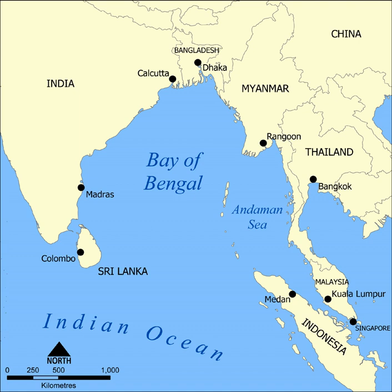The Bay gets its name from the historical Bengal region, the Indian state of West Bengal, and modern-day Bangladesh. In ancient scriptures, this water body may have been referred to as Sinus Gangeticus or Gangeticus Sinus, meaning Gulf of the Ganges. Other Sanskrit names include Vangasagara, meaning Bengal Sea, and Purvapayoti, meaning Eastern Ocean. Even today in Bengali and Odia, it is known by traditional names.